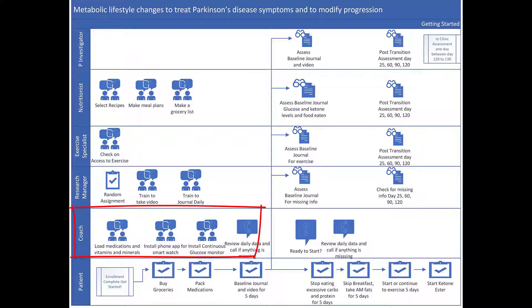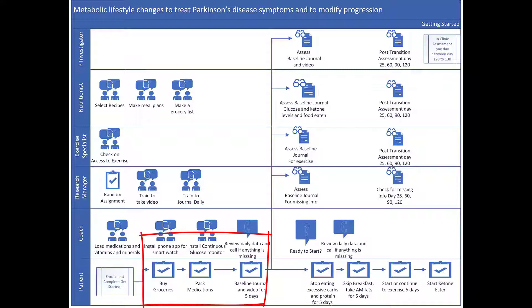The coach will help them load medications and vitamins and minerals into weekly trays. The coach will assist with the phone app for the smartwatch and with installing the continuous glucose monitor app on the smartphone. The participant buys groceries and packs their medications. Then the participant starts to maintain a journal, takes pictures of what they ate, and makes the short video for the doctor to analyze.